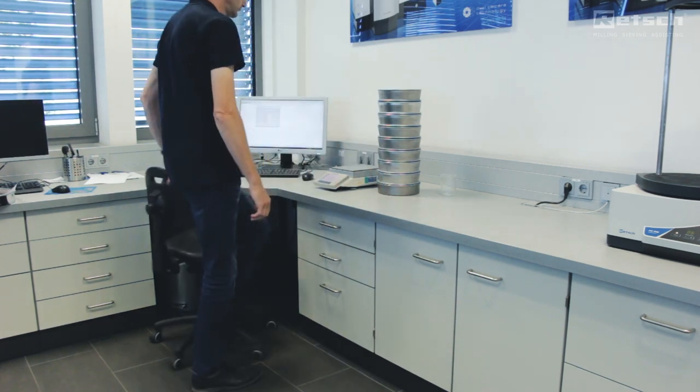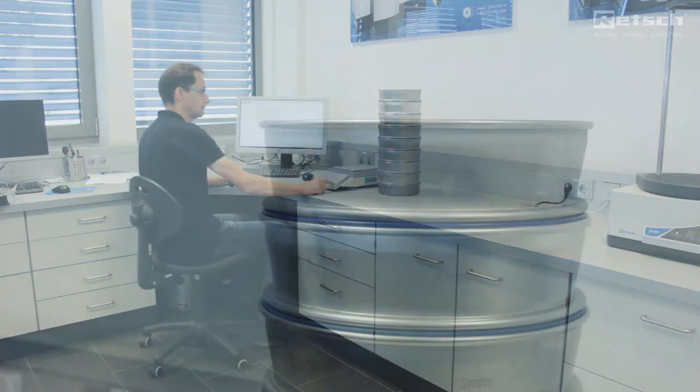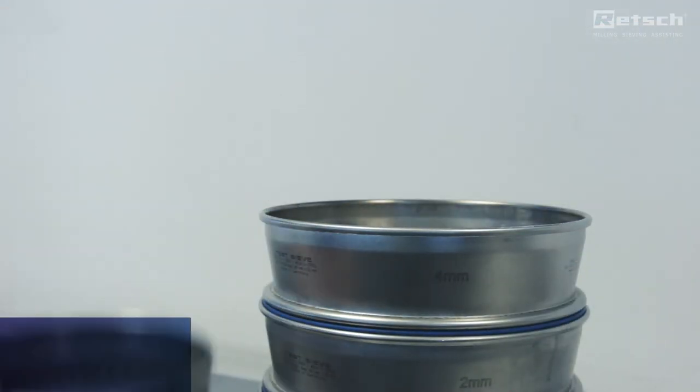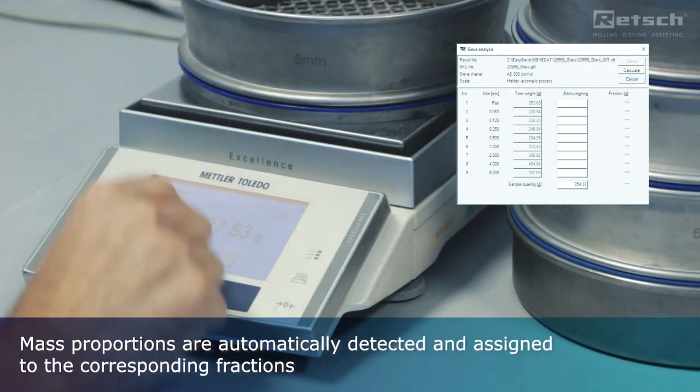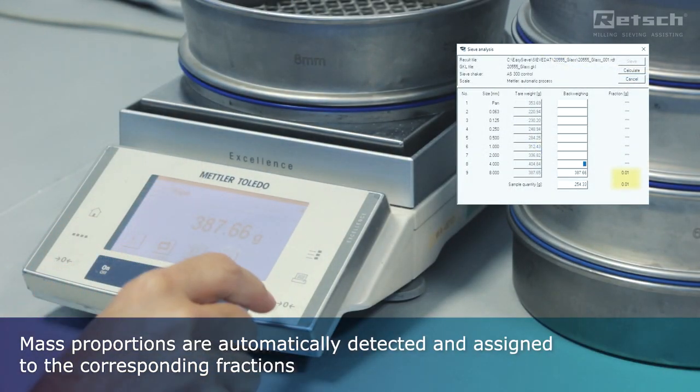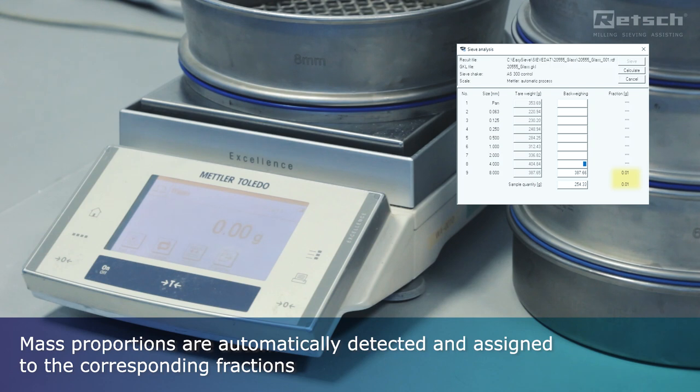After the sieving process, the sieves are re-weighed. By determining the weight difference, the program automatically detects mass proportions and assigns them accordingly to the corresponding fractions. No math required.